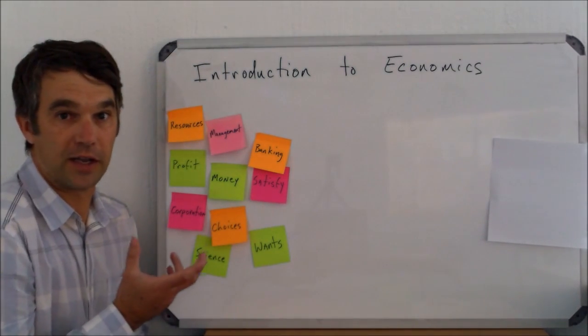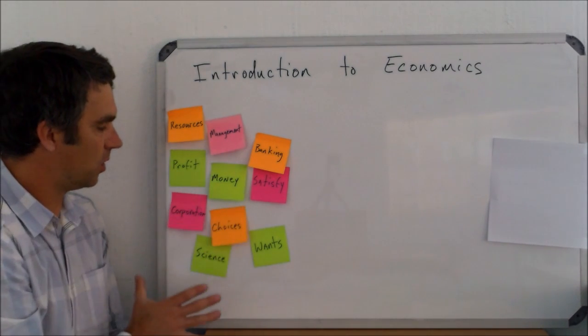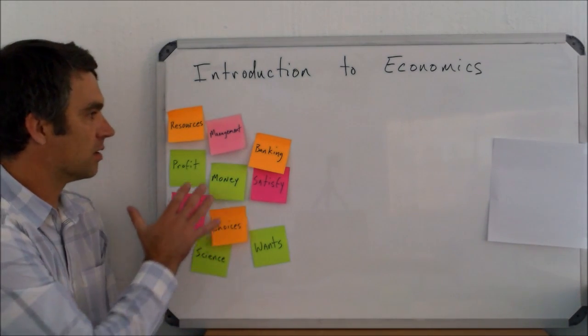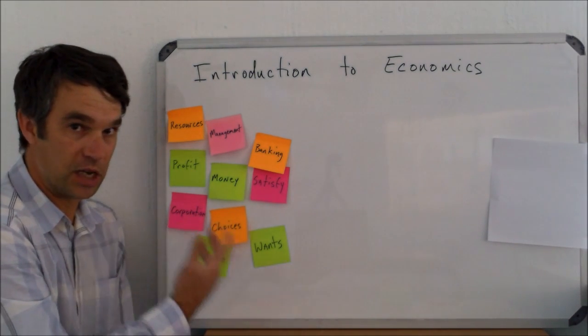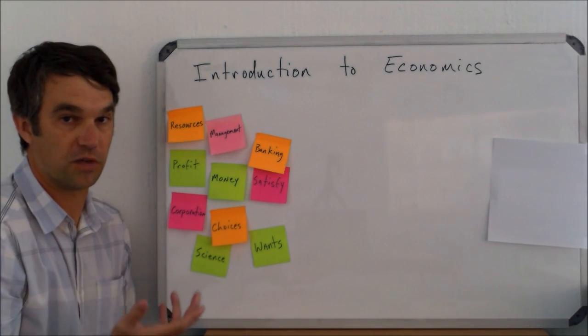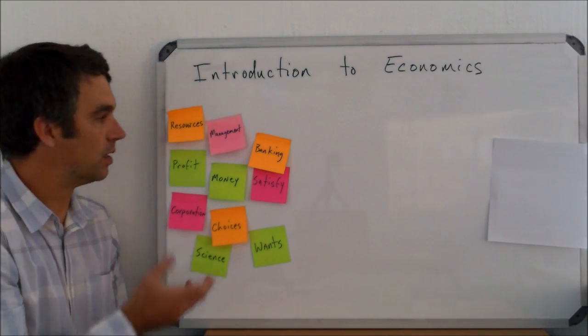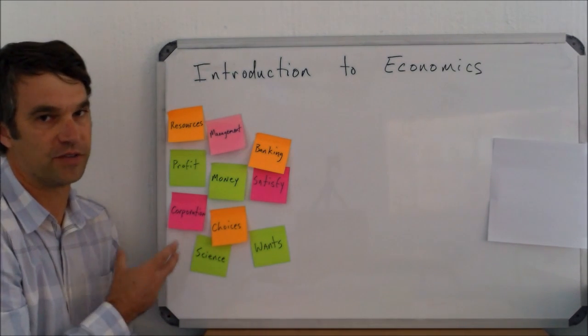The first thing we have to learn about economics is what it is and what it isn't. So I've got a set of ten words over here and what I want you to think about is there's five words that belong in a definition of economics and five words that don't belong. Take a moment, look at the words and decide which five belong and which five don't.